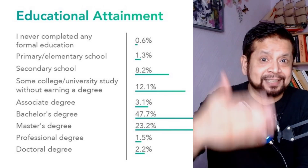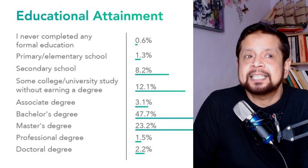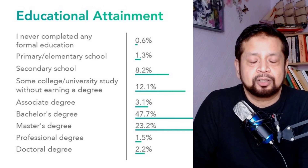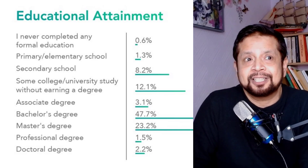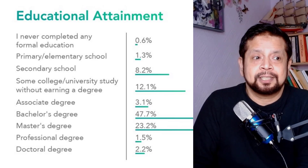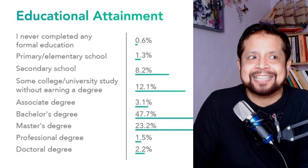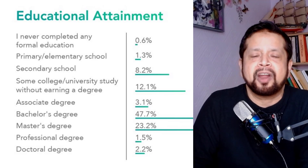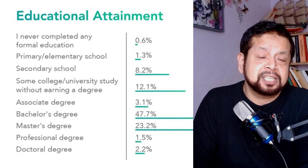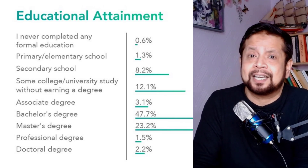Looking at the statistics: about 8.2% of developers have only secondary school education; 1.3% have only primary or elementary school; 0.6% never completed any education; 1.3% have a master's or professional degree. Those with vocational school training are also counted. PhD holders account for 2.2%. Those who studied at college or university without earning a degree make up 12.1% — so many university dropouts or those who only completed secondary school are still working as developers.